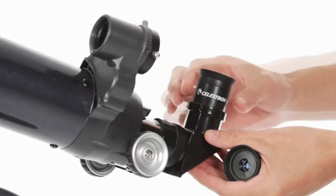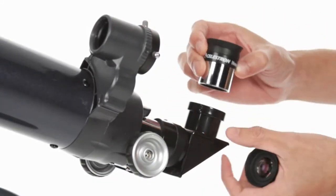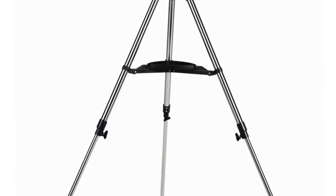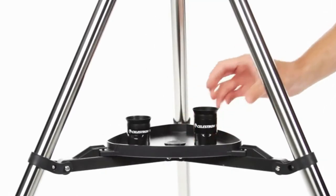Your AstroMaster includes everything you need for a great night of stargazing: two eyepieces, a permanently mounted red dot finder scope, and a full-size lightweight steel tripod with accessory tray.